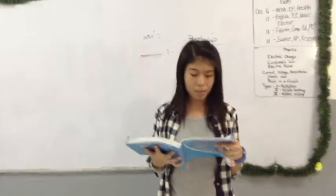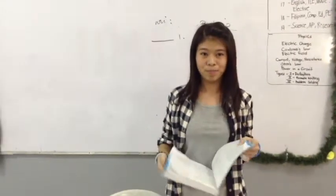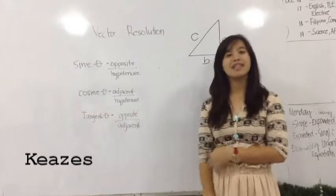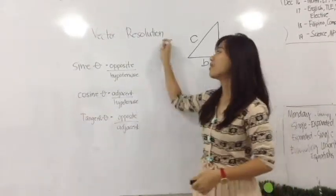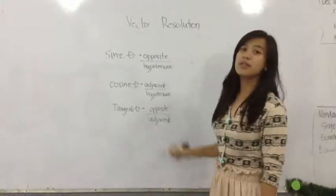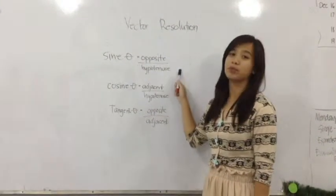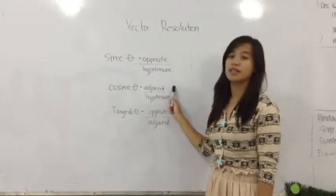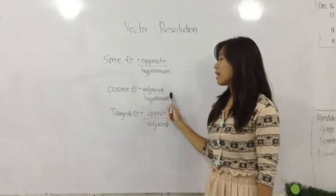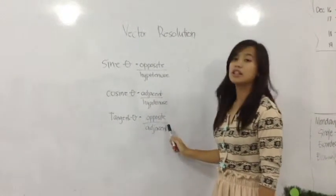Trigonometry can be used to find the magnitudes of these perpendicular vector components. Hi! I'm Kitus. Today I'm going to discuss the formulas we're going to use in vector resolution. The formulas are: sine of angle is equal to opposite over hypotenuse, cosine of angle is equal to adjacent over hypotenuse, and tangent of angle is equal to opposite over adjacent.